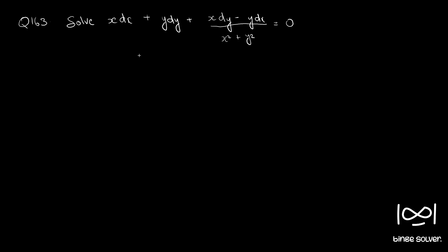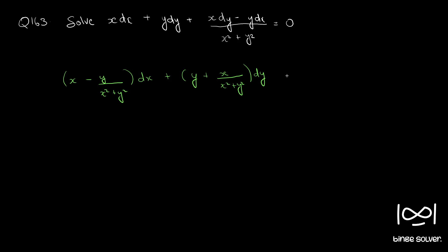Rearranging the terms into M dx plus N dy equals zero form: (x minus y divided by x squared plus y squared) dx plus (y plus x divided by x squared plus y squared) dy equals zero. This is now in M dx plus N dy form.